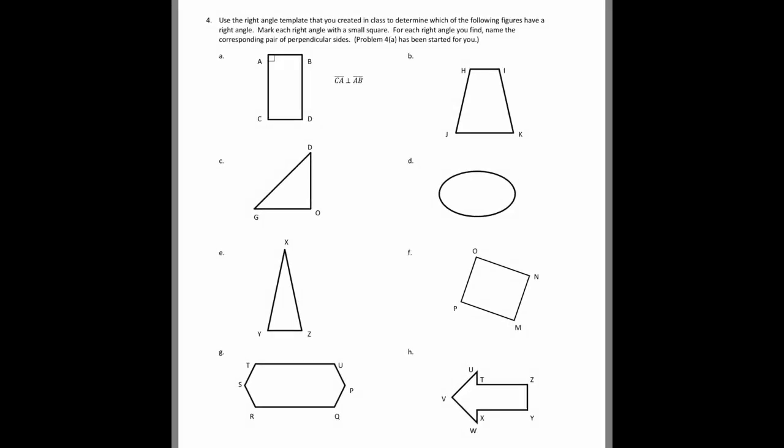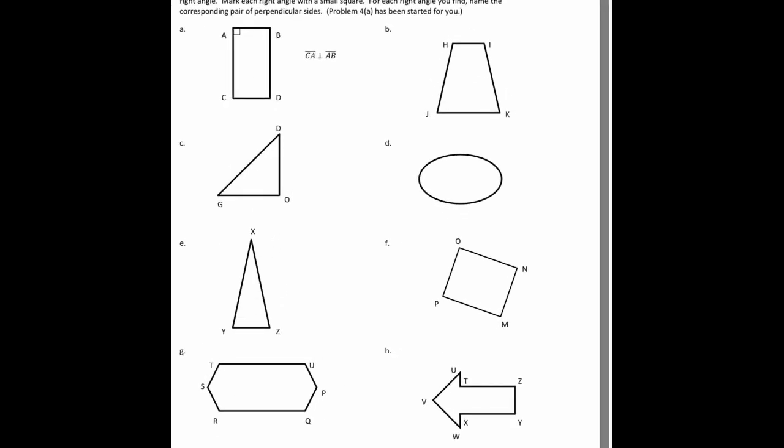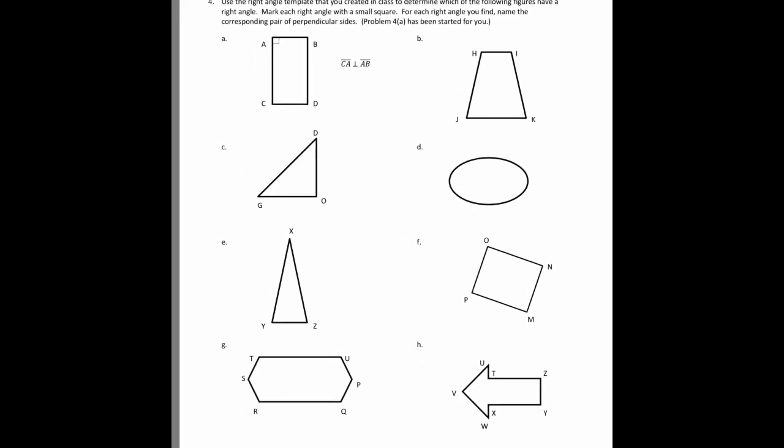Next on number four, we are using the right angle template. So we are going to use our right angle template to look and see what kind of right angles we have in these shapes, if we have any. And then we're going to use what we know about naming line segments to name pairs of perpendicular lines. So in the first example, for A, they have that CAB is a right angle. So that means that line segment CA is perpendicular to AB. And we use that little upside down T symbol to stand for perpendicular. So we're going to look at the shape, and we're going to finish labeling all of the right angles that we find.